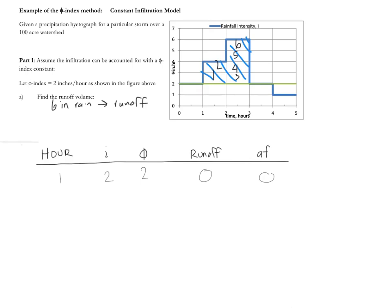Okay, I'll do out loud again the next entry. So in hour two, the intensity of rain i is four inches per hour. The infiltration is a constant rate of two. The runoff is then two inches per hour, which we can convert to acre feet. I encourage you to do that math. 16.7 acre feet.